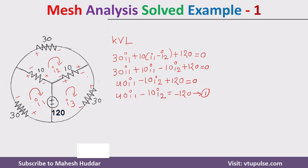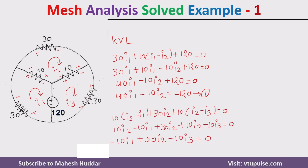For the second loop we need to find the equation: 10·(I2 − I1) + 30·I2 + 10·(I2 − I3) = 0. By solving this equation we get −10·I1 + 50·I2 − 10·I3 = 0. Make this equation number 2.